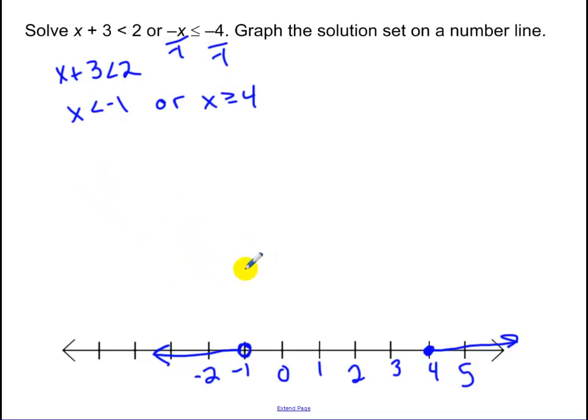And just so you guys realize, this written as interval notation would be negative infinity to negative 1, or, I include 4 and then we never include infinity so it gets a parenthesis.